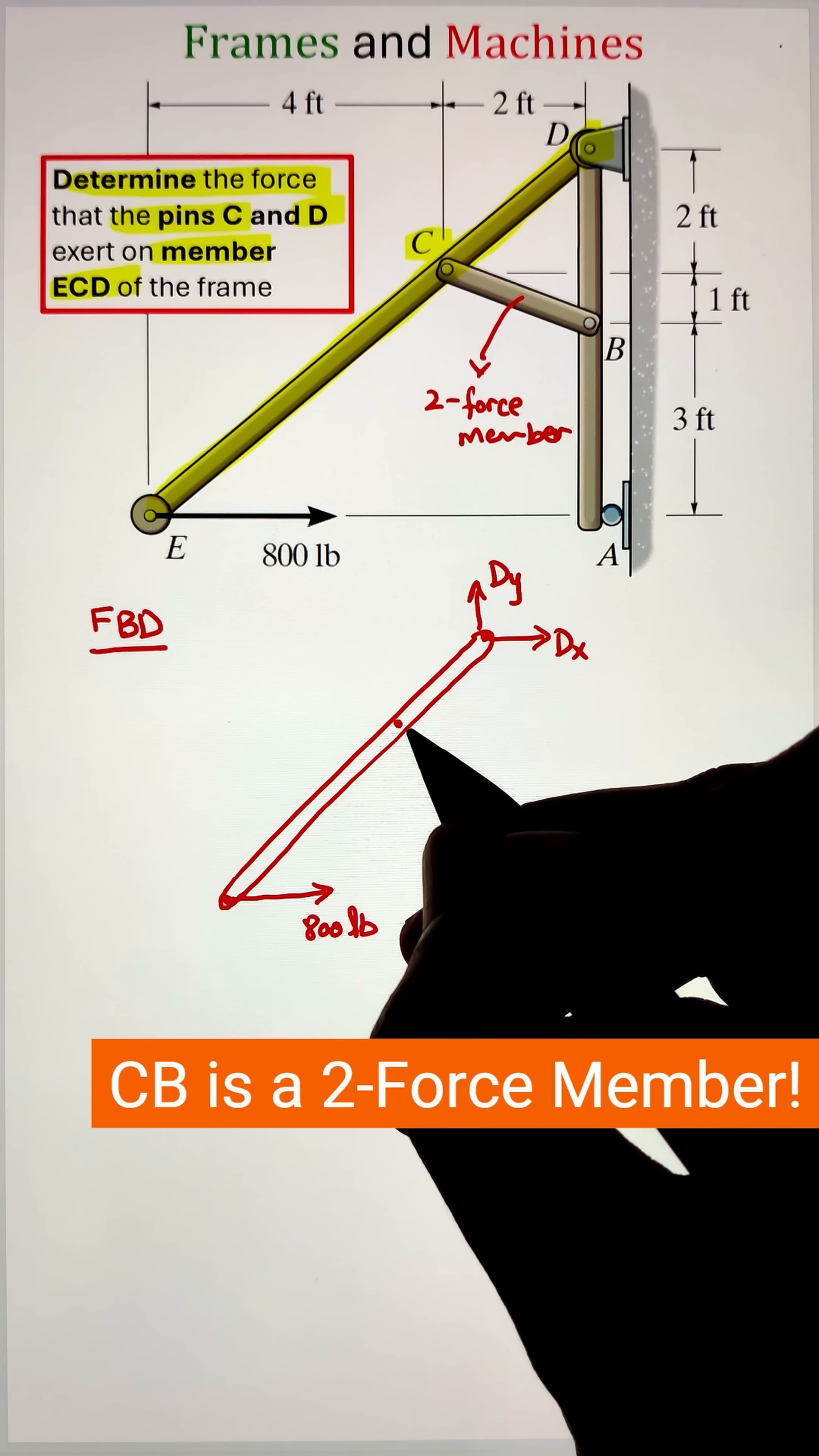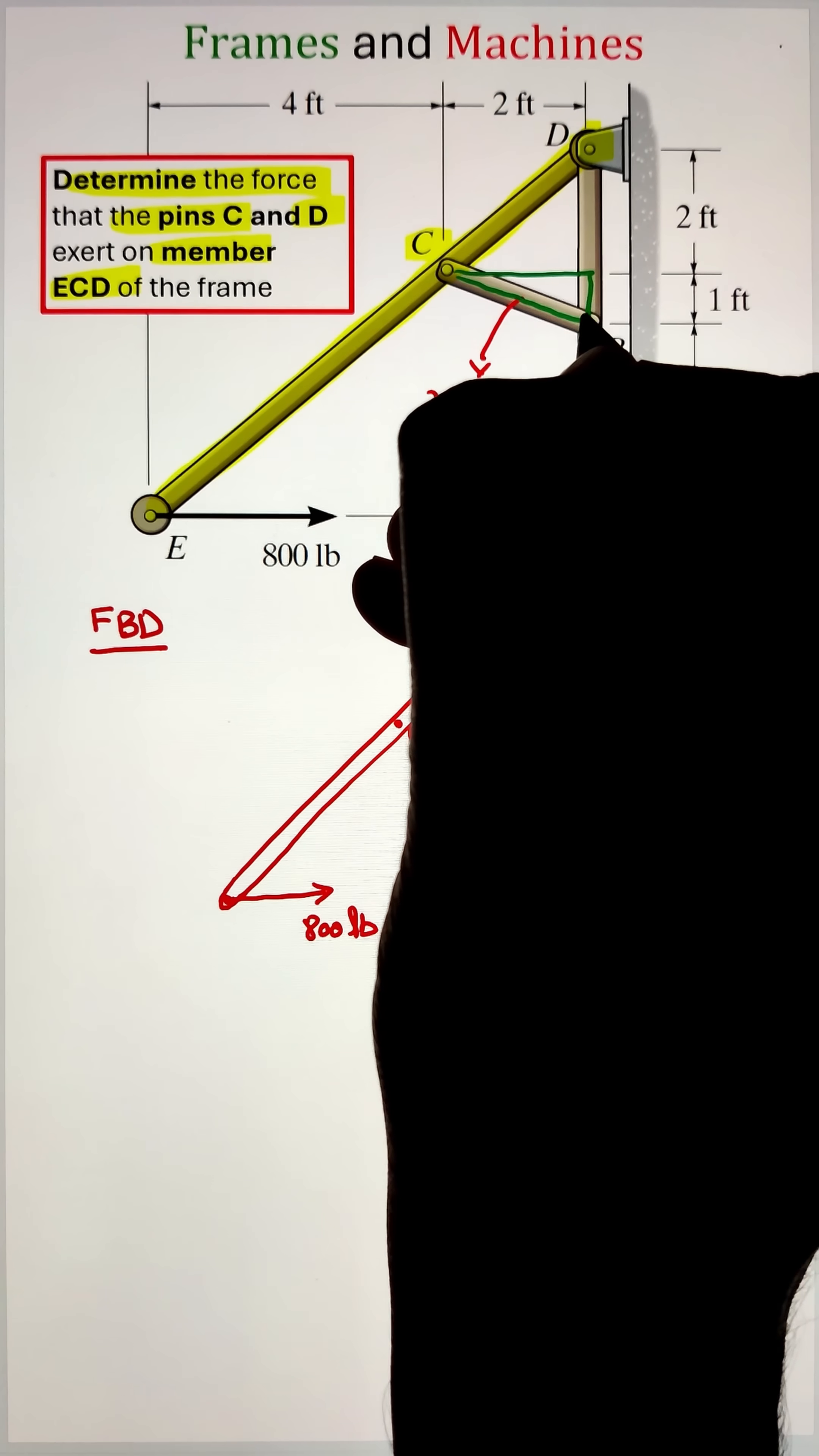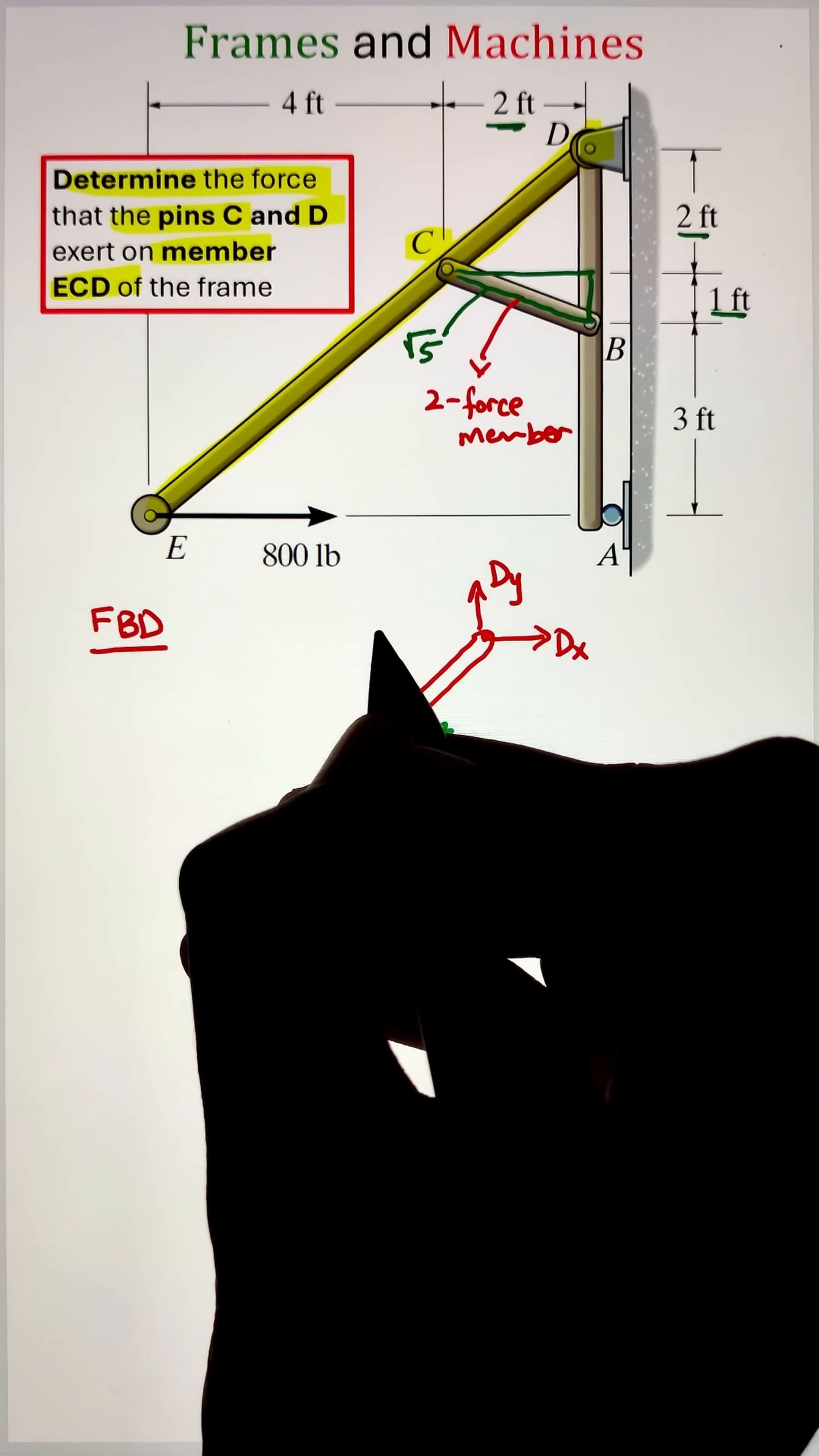The member CB is a two-force member, so the force will be exerted along the axis of the member and can be represented by FCB along the axis. We can identify the direction of that axis by the right angle triangle given by a base of one foot and the perpendicular distance of two feet, giving us the hypotenuse of root five.